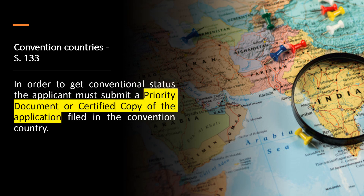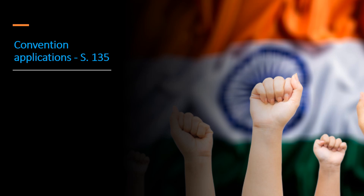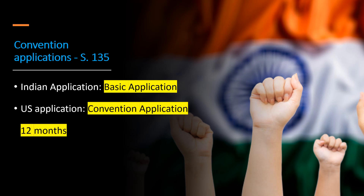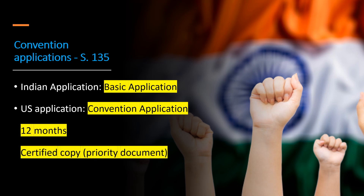In order to get convention status, the applicant must submit a priority document or certified copy of the application filed in the convention country. A priority document in India can be obtained from the Indian Patent Office and shall be certified by the Controller at the Indian Patent Office. The applicant usually files a patent application for the first time in their national office — this application is called the basic application. Within 12 months of filing the basic application, the applicant can file a convention application directly in one or more convention countries, submitting a certified copy to claim priority of the first-filed application.